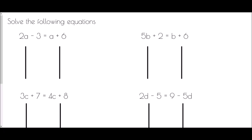The next set of examples has a little bit more to deal with. We start with 2a take away 3 equals a plus 6. First step: find the smallest amount of a and get rid of it — in this case it's the single a. Subtract a from both sides: 2a take away a leaves 1a, so a take away 3 equals 6. To get a all on its own I add 3 to both sides, giving a equals 9.